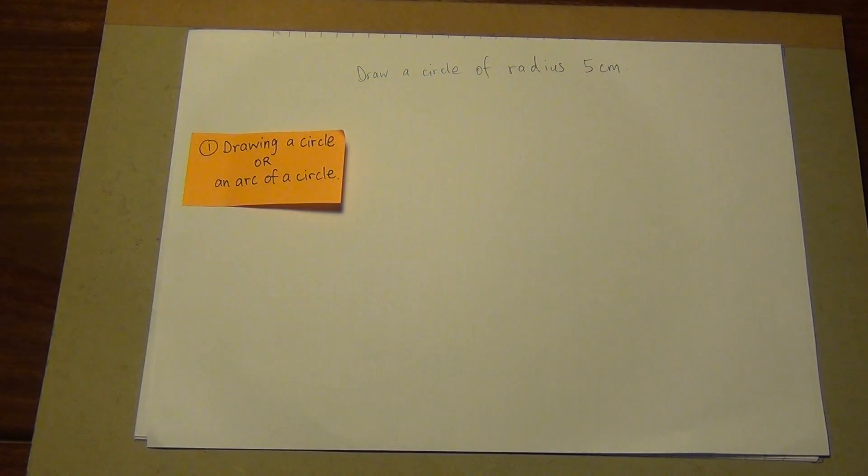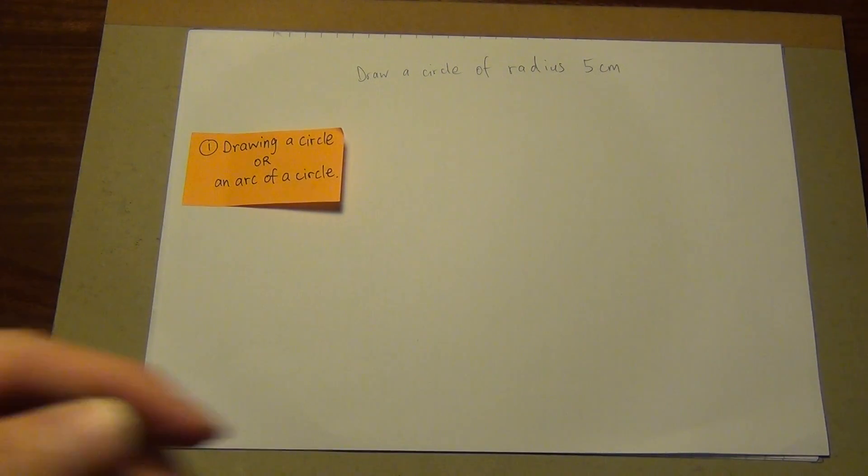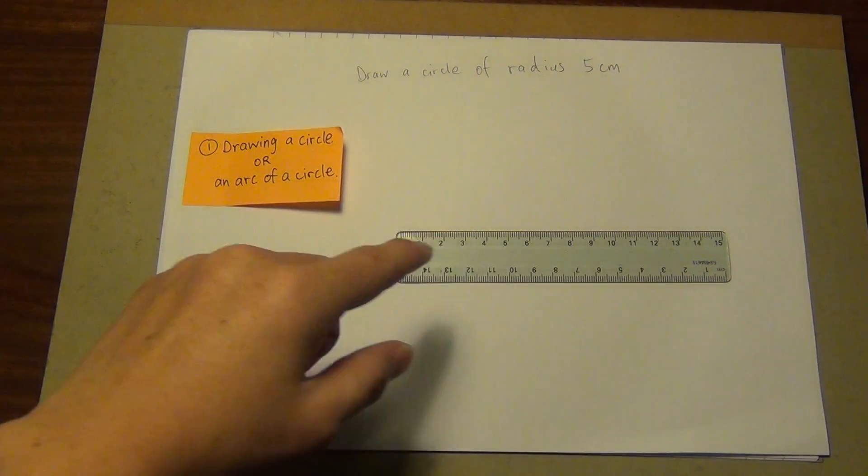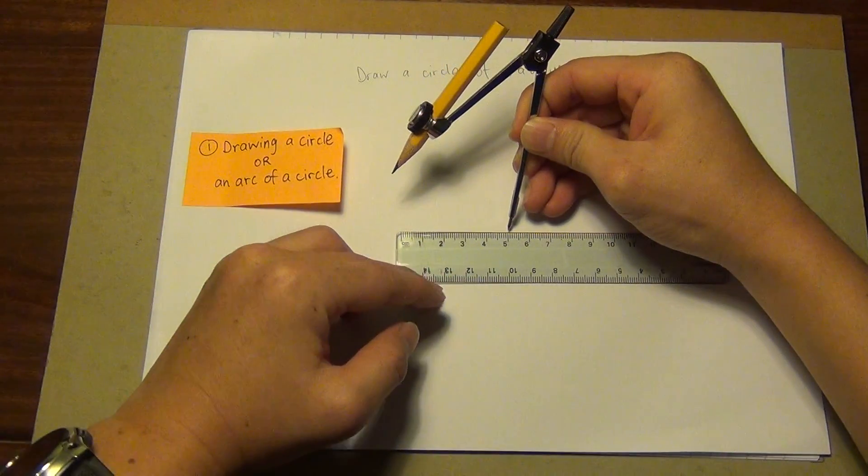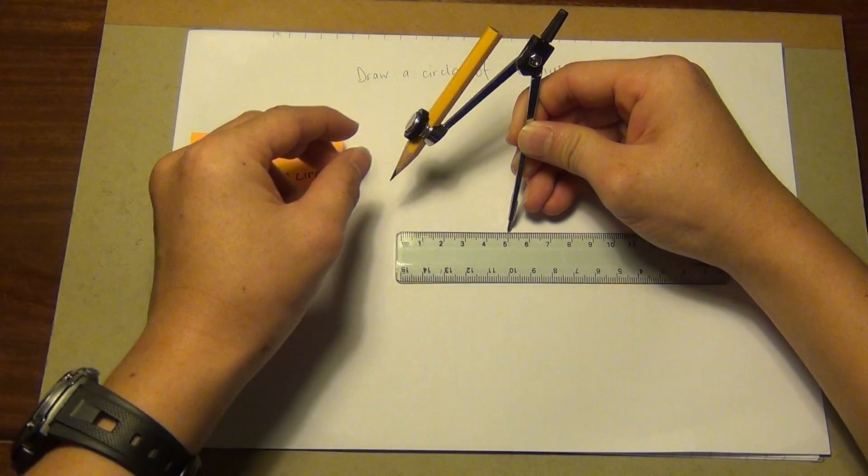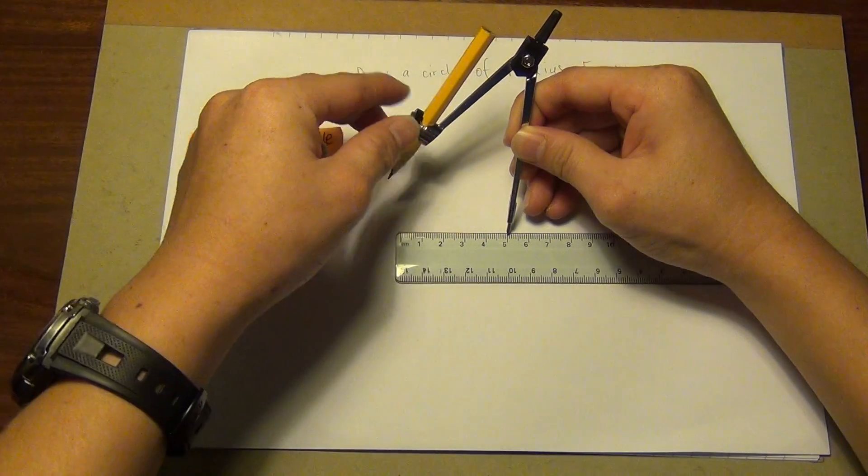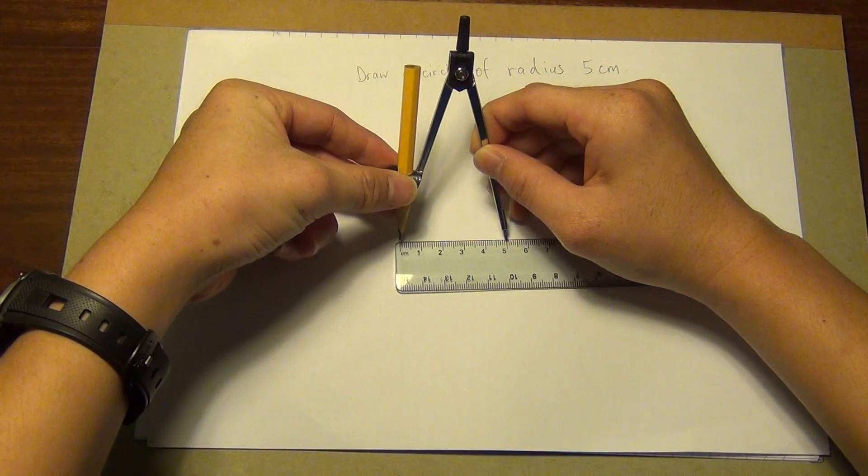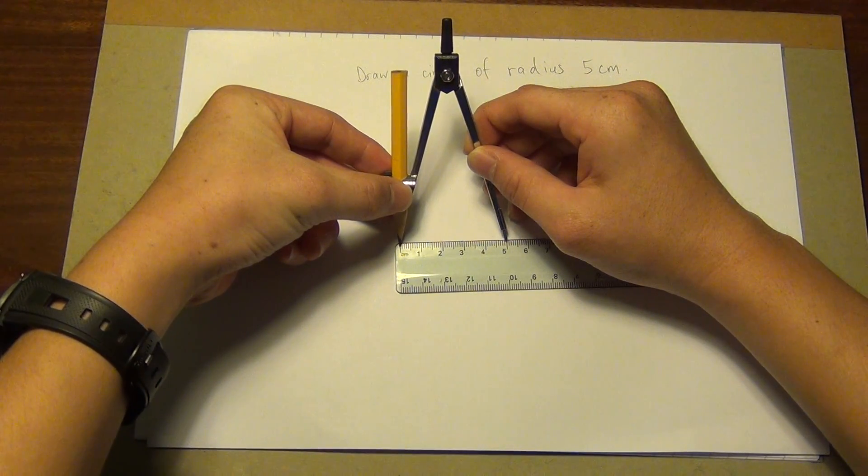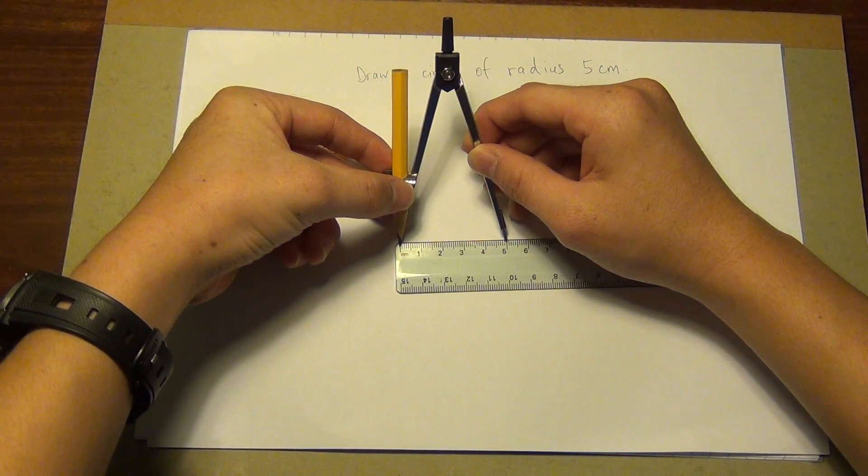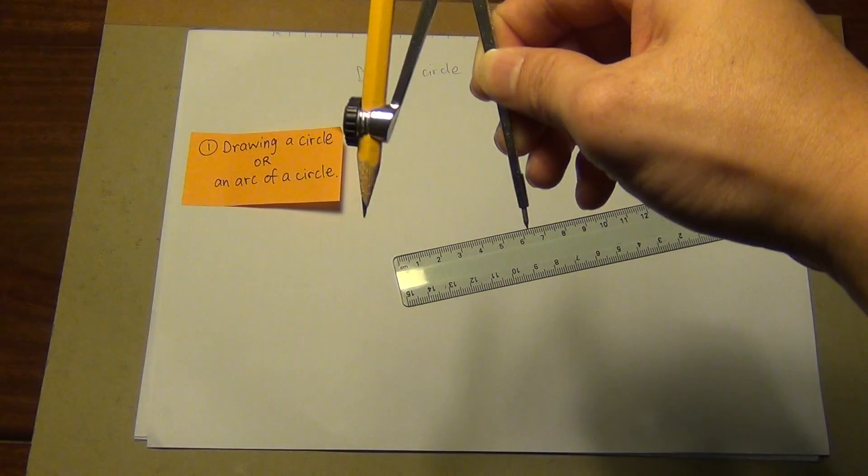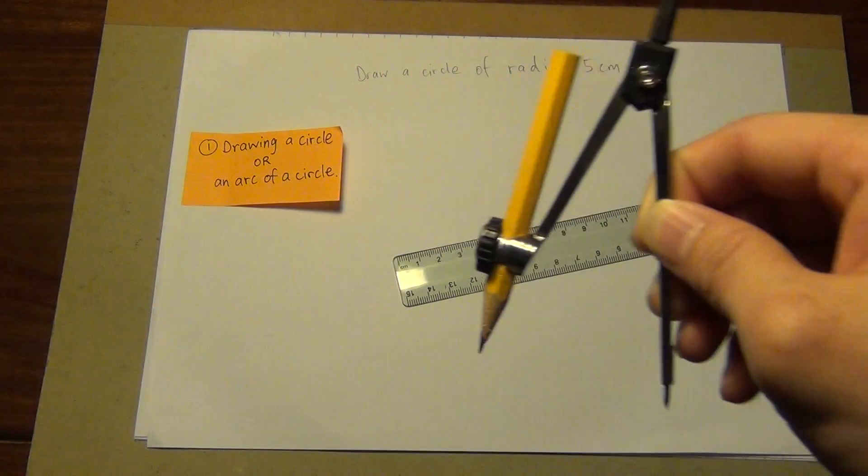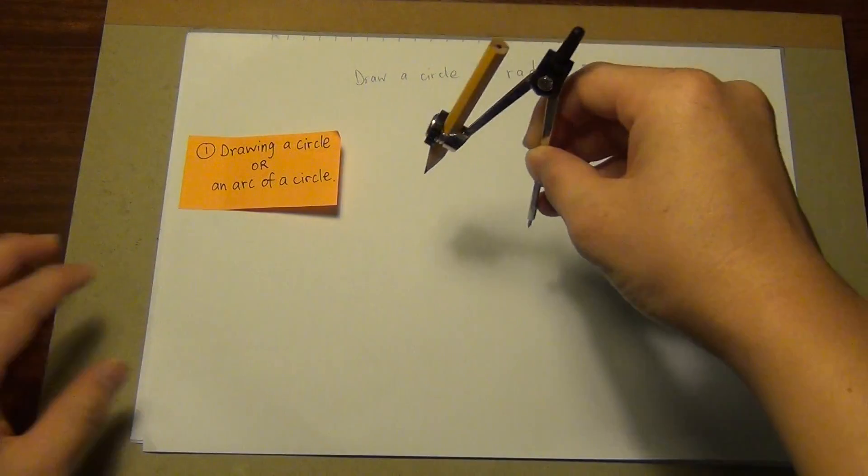Recall from your primary school what the radius means. I'll first take my compass and put the pointer end at 5cm. Then I'll adjust the drawing end so that it hits zero. Therefore I know that this length I mark off from the ruler is 5cm.